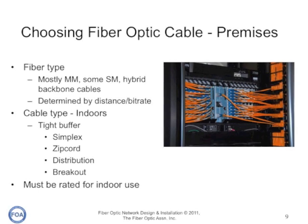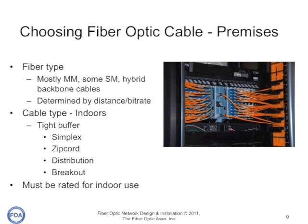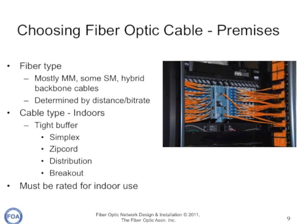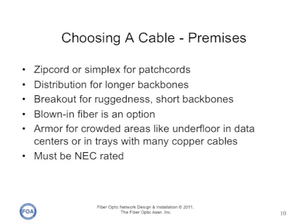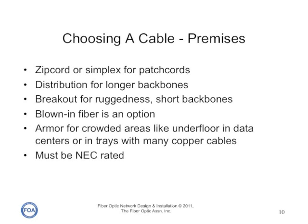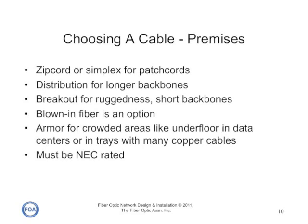There are four basic types of cable we use indoors: simplex, zip cord, distribution, and breakout. Zip cord and simplex cable is used mainly for patch cords, although zip cord can be used for connections to the desktop or to things like video cameras. Distribution cable is used for longer backbones or where you need many fibers. Breakout cable is a rugged cable type used primarily for short backbones and industrial applications. Blown-in fiber is also an option.